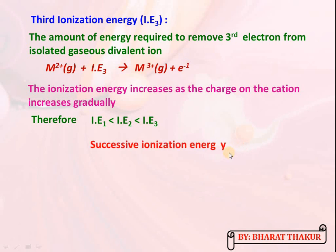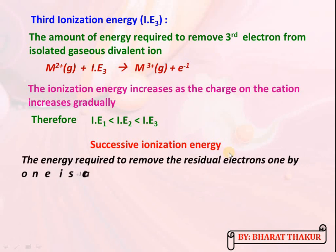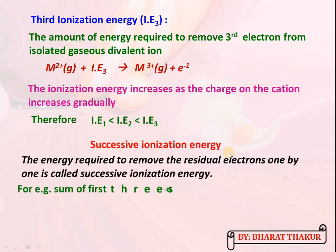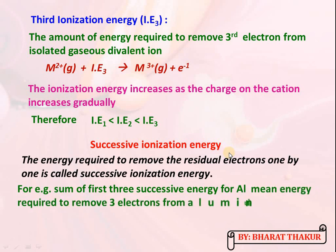The term 'successive ionization energies' means the energies required to remove residual electrons one by one — first, second, third, and so on. For example, the sum of the first three successive ionization energies for aluminium means the total energy required to remove three electrons from aluminium one by one.